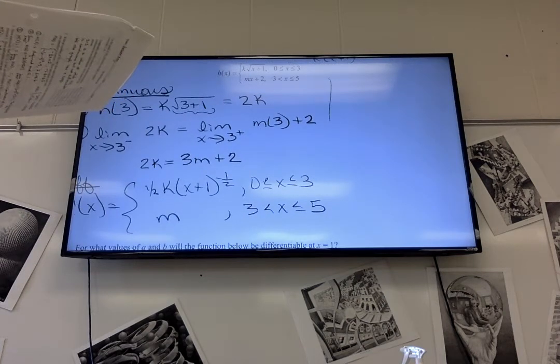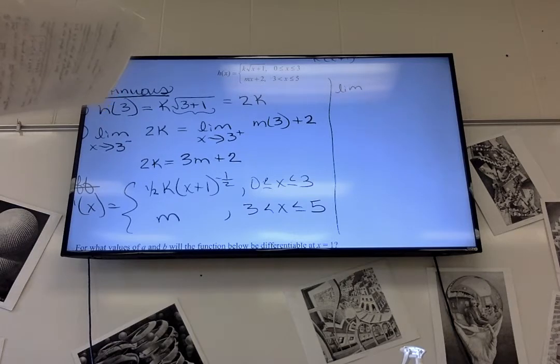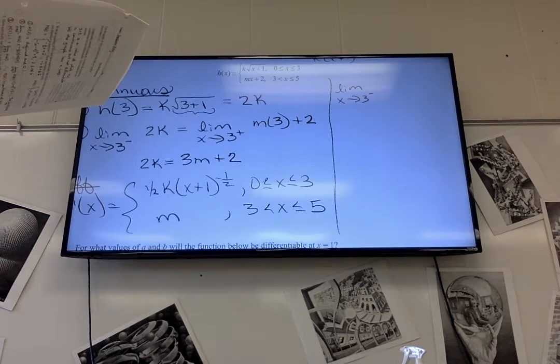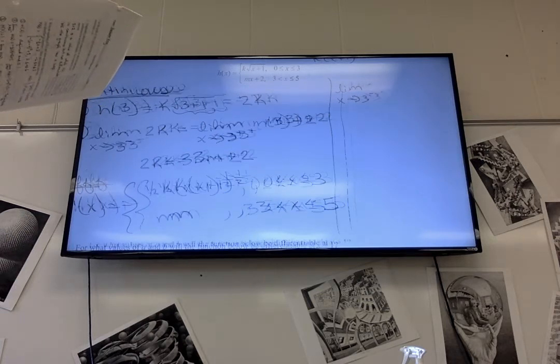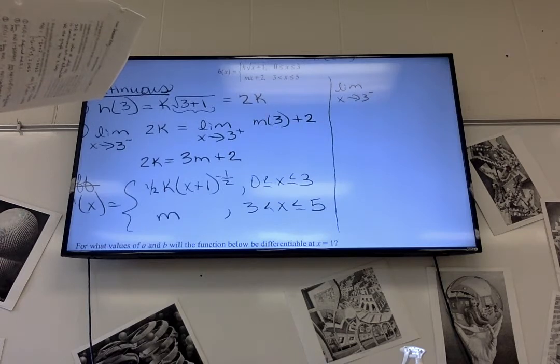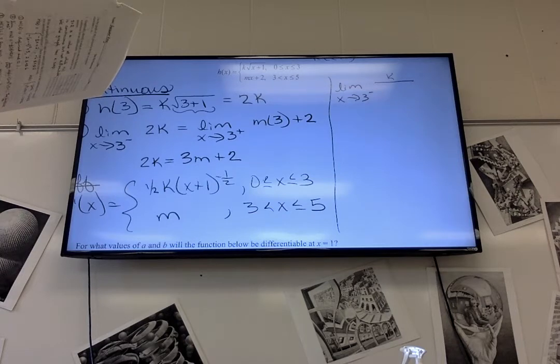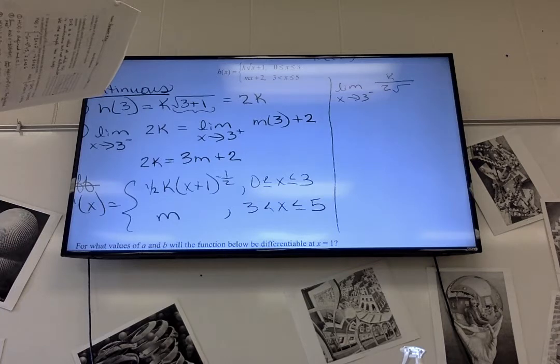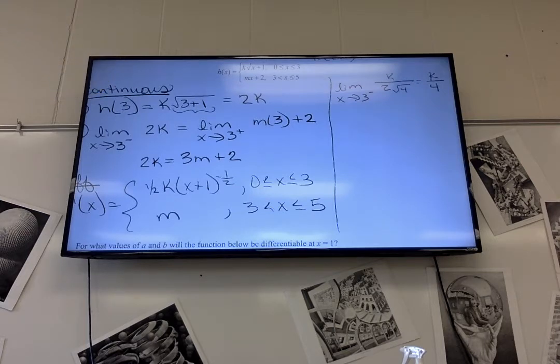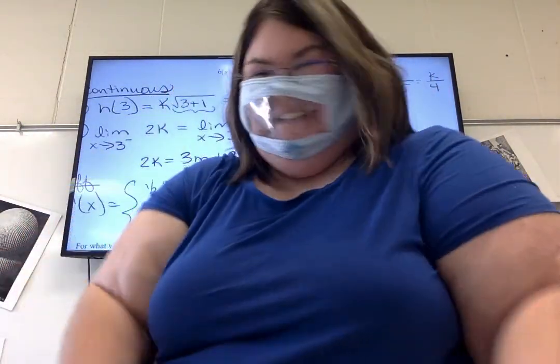It's going to be math over here. The limit as x approaches 3 from the left of h prime of x is k over 2 times square root of 4. So it's k over 4. Make sure you work on the other homework. Please hold the kids in the classroom at this time. Hold the kids in the classroom. We're going to keep going. Screwed by the bell.